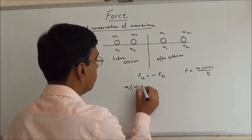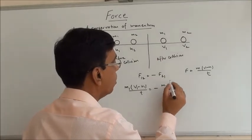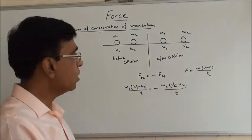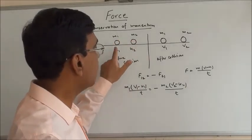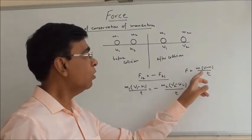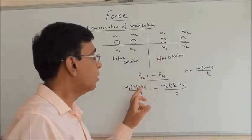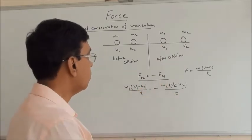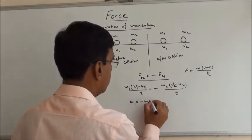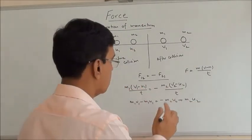Force on m1 is m1(v1 minus u1) upon t, and force on m2 due to m1 is m2(v2 minus u2) upon t. By Newton's third law these are equal and opposite. The t cancels out, giving: m1·v1 minus m1·u1 equals minus m2·v2 plus m2·u2.